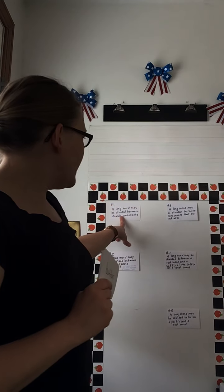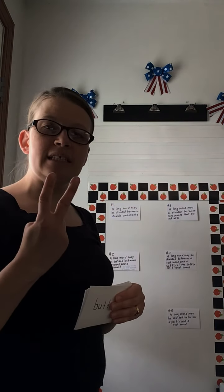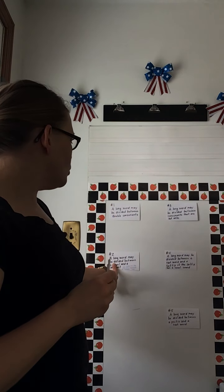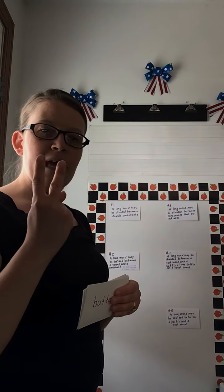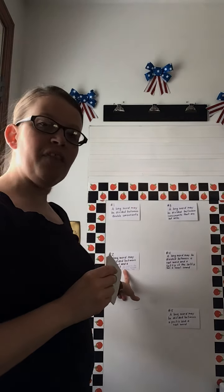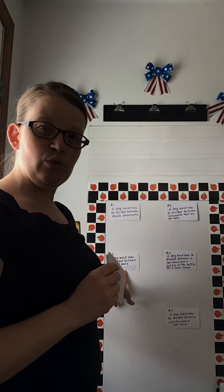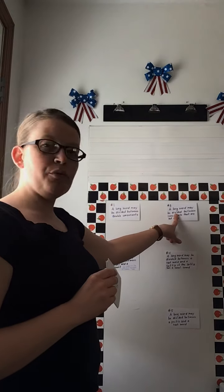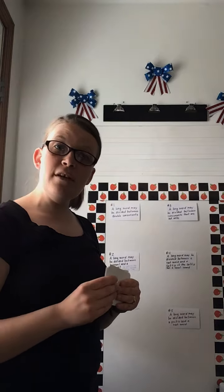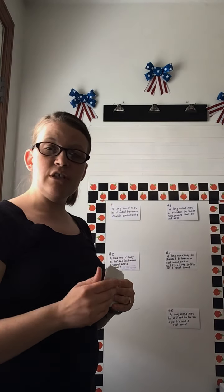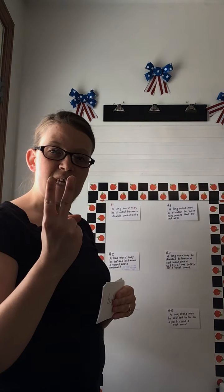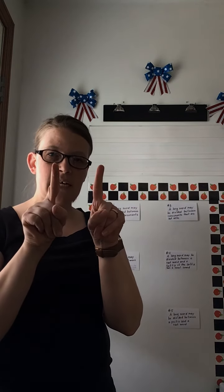Rule one: you can divide a long word between two consonants that are the same. Rule two: you can divide a long word between a vowel and a consonant — if you do that, the vowel at the end of the syllable is usually long. Rule three: you can divide a long word between two consonants that are not the same. So you can divide between two consonants that are the same, two consonants that are not the same, or between a vowel and a consonant.